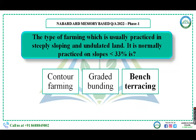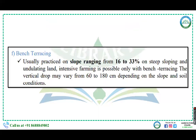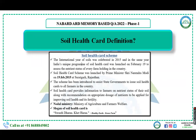The type of farming usually practiced on steeply sloping and undulated land, normally practiced on slopes less than 33 percent — the answer is bench terracing. Bench terracing is usually practiced on slope ranges from 16 to 33 percent.